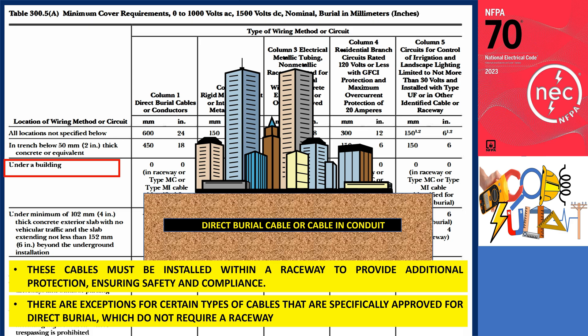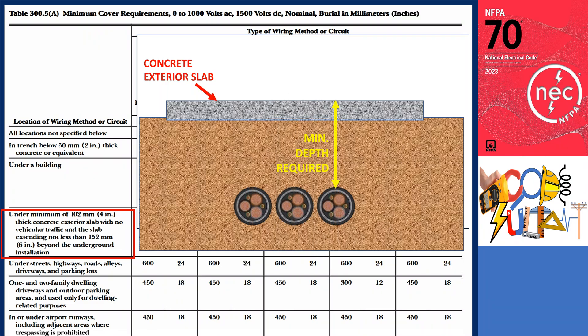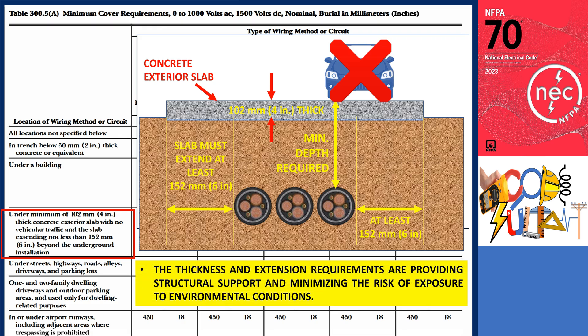The fourth location type involves the installation of wiring beneath a concrete exterior slab. For compliance, the slab must be at least 102 millimeters (4 inches) thick and designed to withstand no vehicular traffic. Additionally, the slab must extend at least 152 millimeters (6 inches) beyond the area of the underground wiring. These thickness and extension requirements are crucial for providing structural support and minimizing the risk of exposure to environmental conditions.